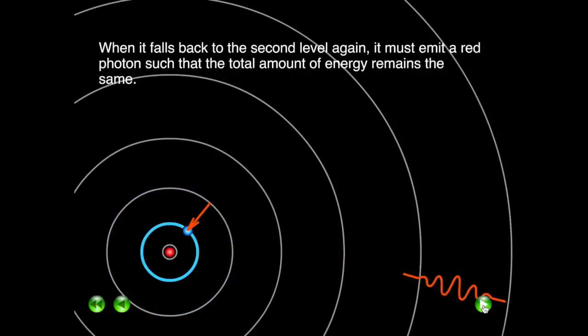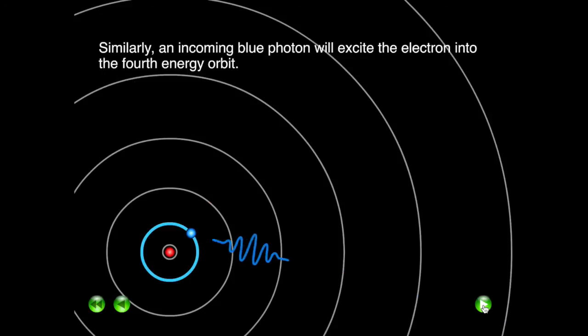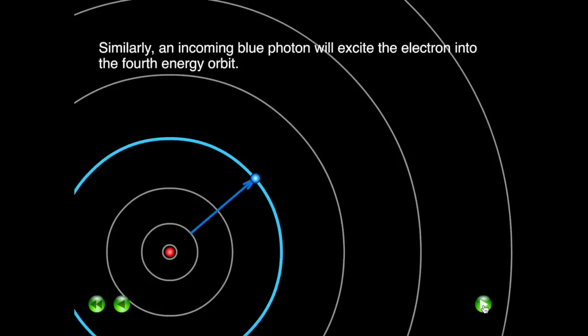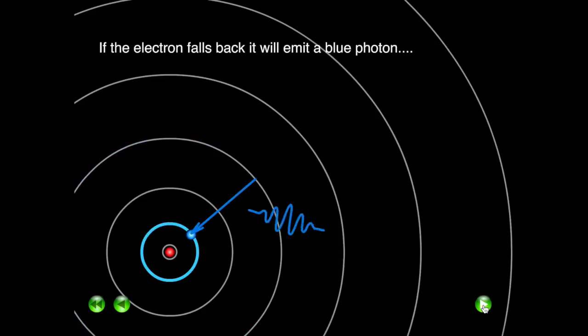When the electron falls down to the original level, it will emit back the energy absorbed which is going to be in the form of red light. Absorbing a blue energy or photon will take the electron to a higher level than a red photon. When this electron falls down to the original level, which is called ground level, it's going to emit back the blue energy or the blue photon.